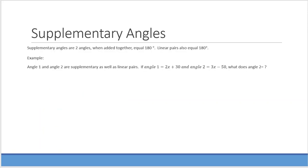Supplementary angles are two angles that when added together equal 180 degrees. Linear pairs also equal 180 degrees. For example, if angle 1 and angle 2 are supplementary and linear pairs, and angle 1 is 2x plus 30 and angle 2 is 3x minus 50, what does angle 2 equal? We set up: (2x + 30) + (3x − 50) = 180 degrees.